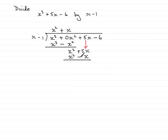And then we've got plus 5x subtract minus x. So that's 5x minus minus x, which is 6x. Bring down the next term, in this case minus 6. We bring that down, put it underneath. Repeat again. What do we multiply this x by to get the 6x? And that would be plus 6. So put plus 6 up there. And then 6 times x minus 1 gives 6x minus 6.